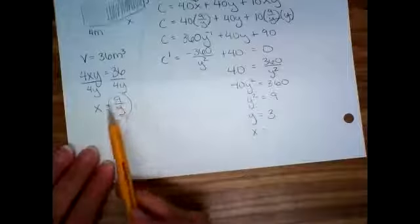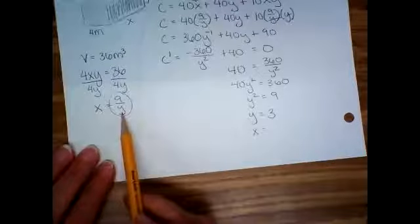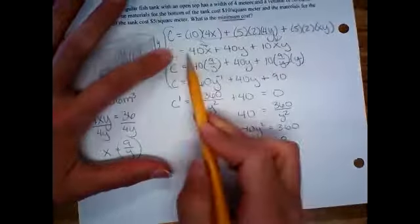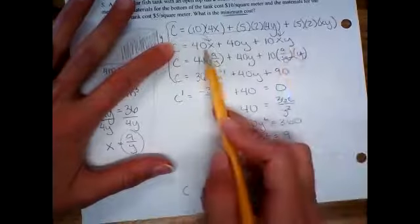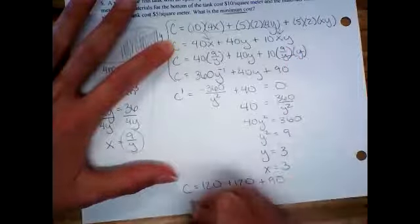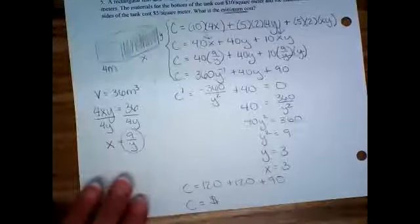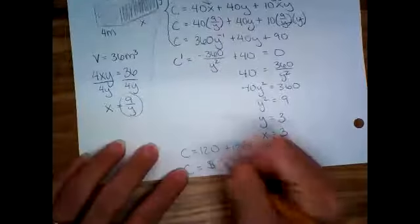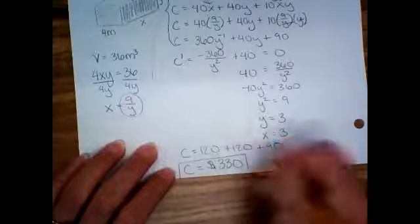So let's see what X is. I would look back right here. X is nine over Y. So if Y is three, what's X? Three. Shocking. I know that they came out to the same thing. And then we need to figure out the cost. You have four different equations for cost. Do you see all of these? Take your pick which one you want to plug into. Which one do you think looks easiest? Maybe the second one. Okay. Everywhere there's an X or a Y, you're going to put three. So 40 times three would be 120 plus another 120 plus 10 times three times three. 10 times nine would be 90. So that tank costs $330, which is fair because it was huge.